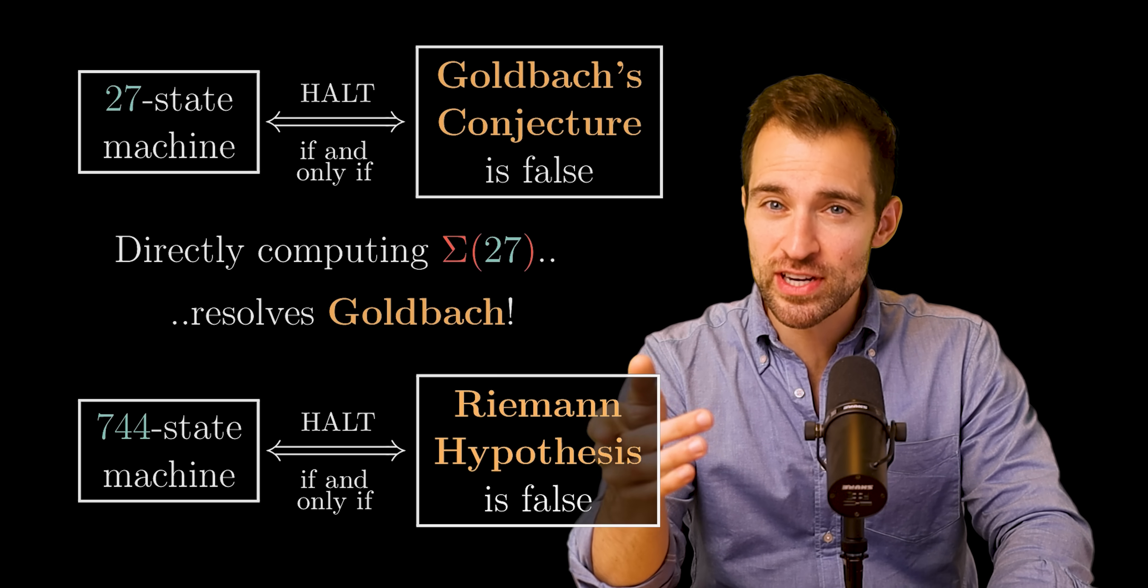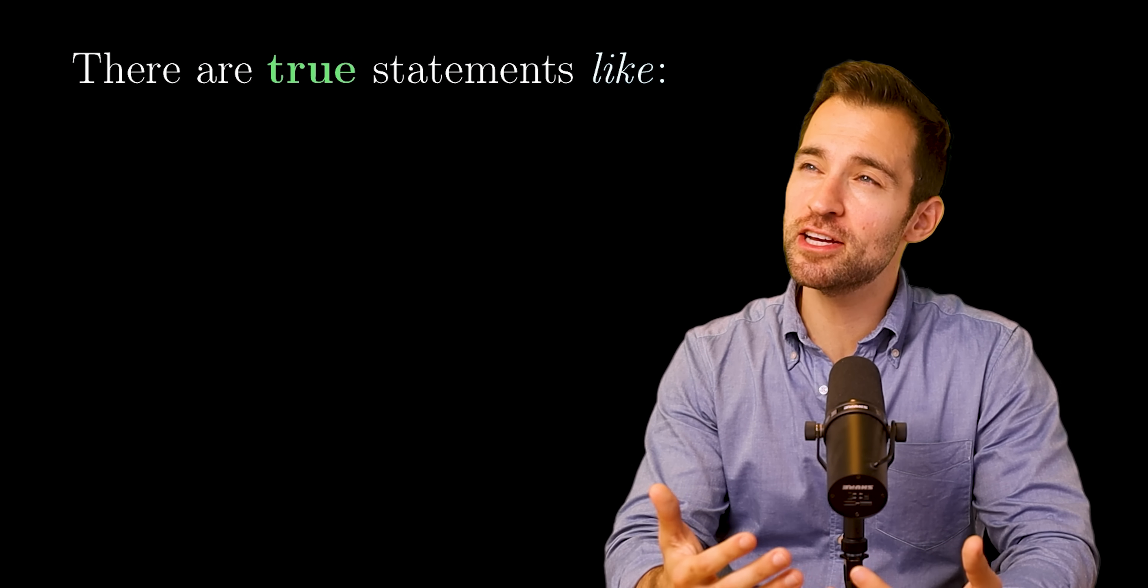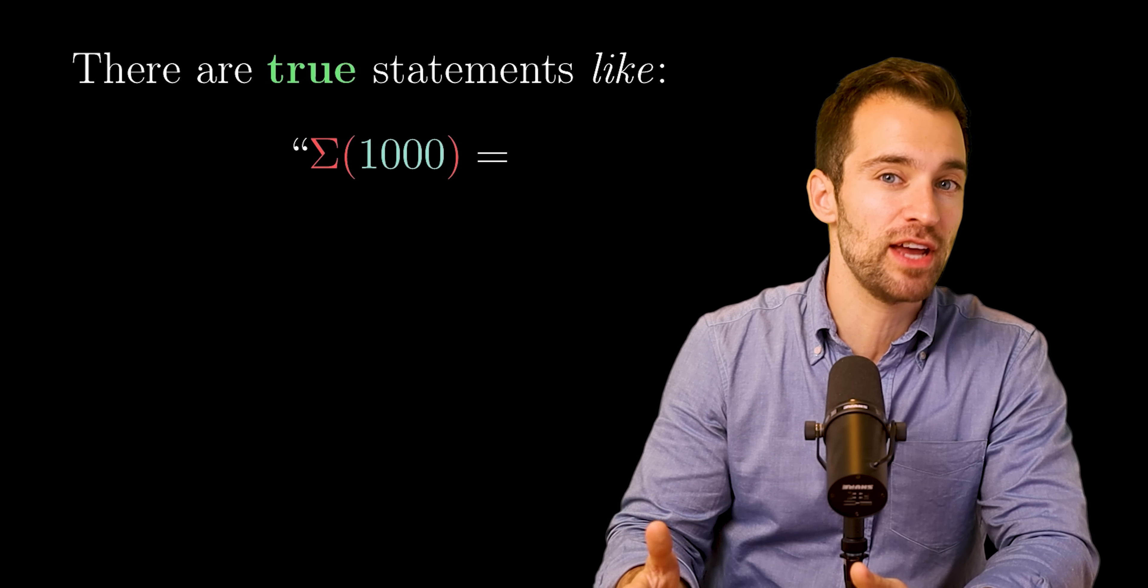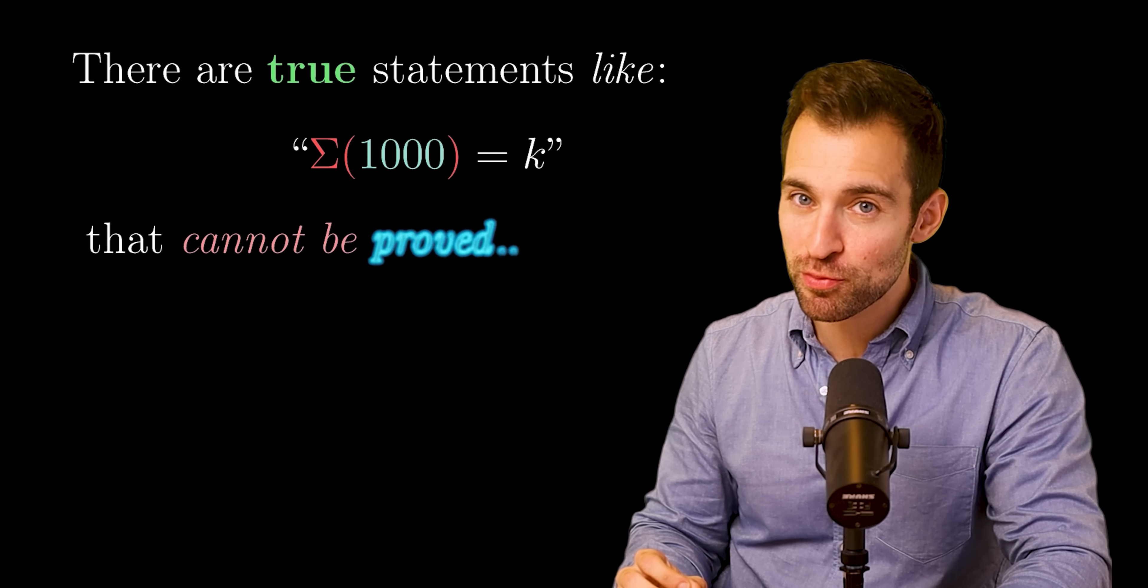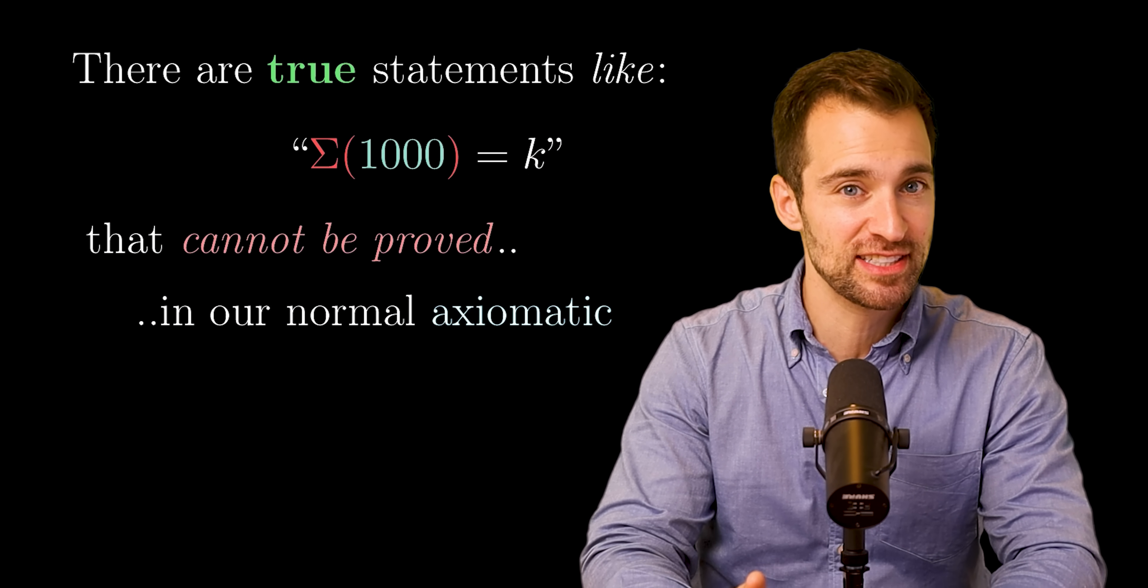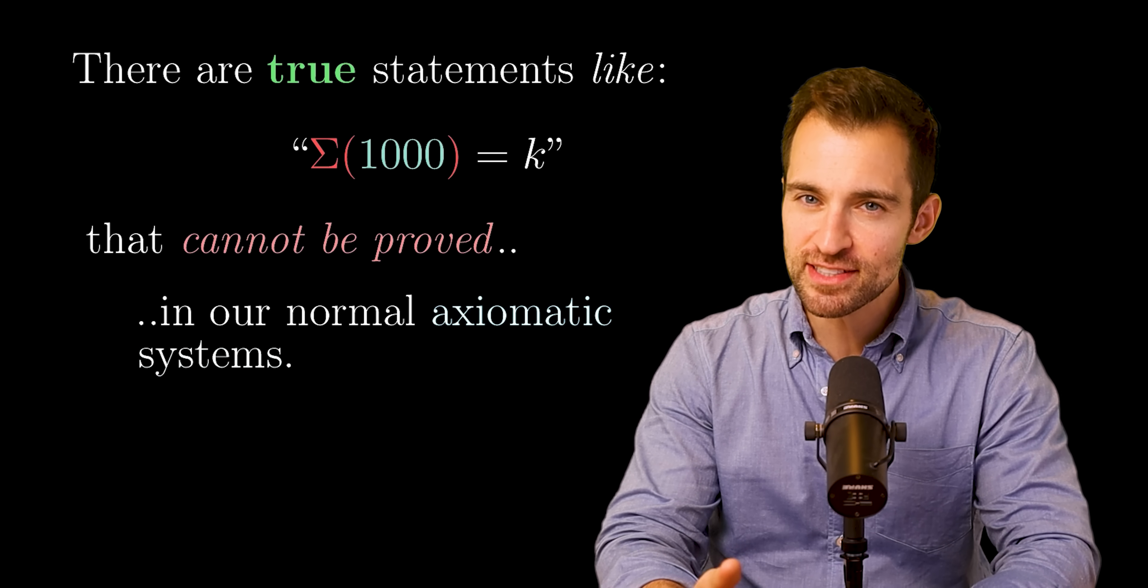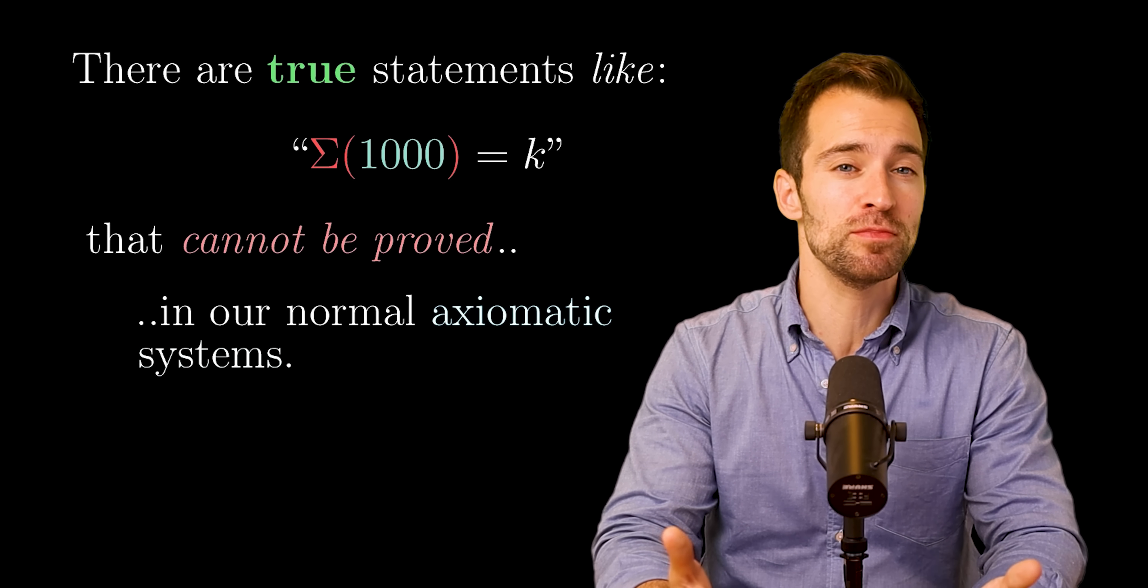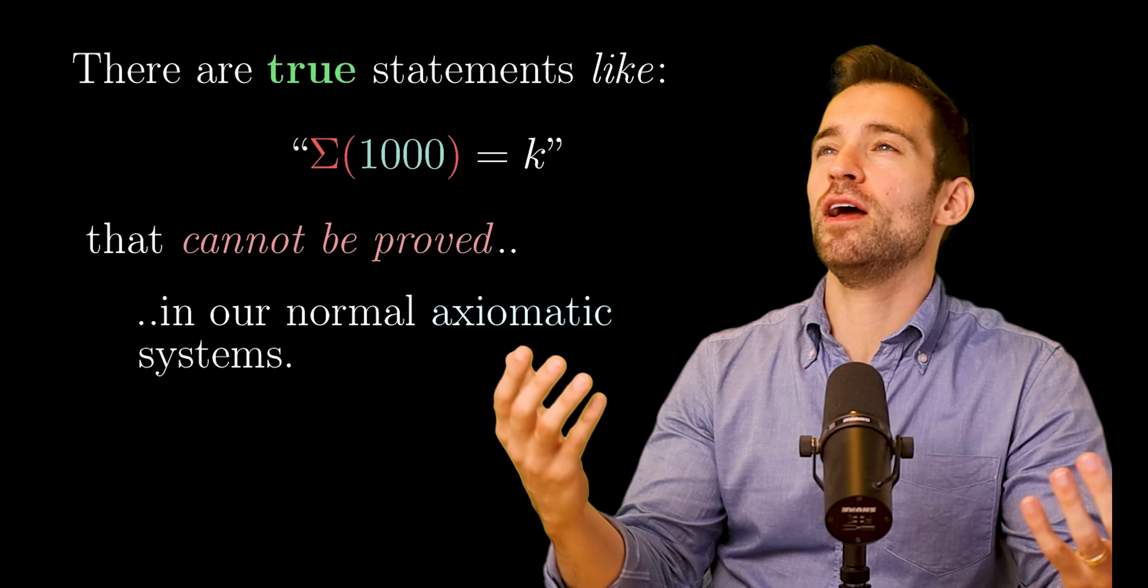And it actually gets stranger. It turns out there are true statements like, say, sigma of a thousand equals some number k that cannot be proven in our normal axiomatic systems of mathematics. This is to say, beyond a point, math loses the ability to make claims about these numbers. Which is just, what?